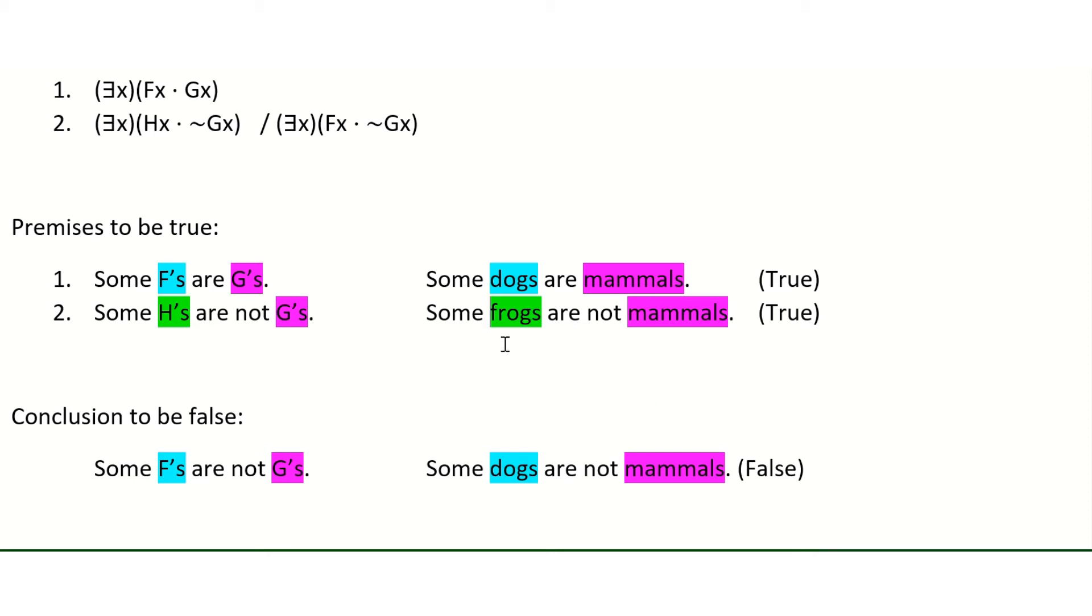And so here then our counterexample is that some dogs are mammals. That's an exact match for the form of premise one. Some frogs are not mammals. That's an exact match for premise number two. And they're both obviously true. And then therefore some dogs are not mammals. That's obviously false. But that's also an exact match for the conclusion.